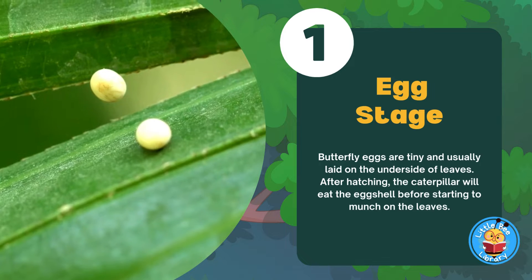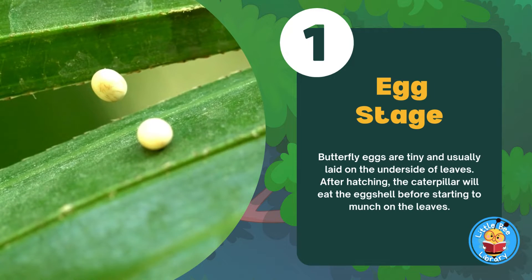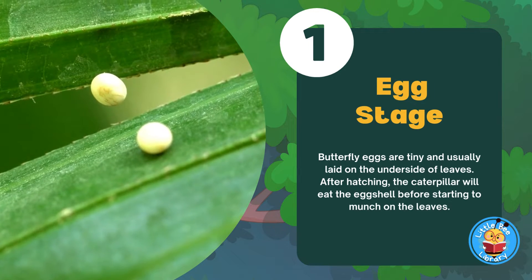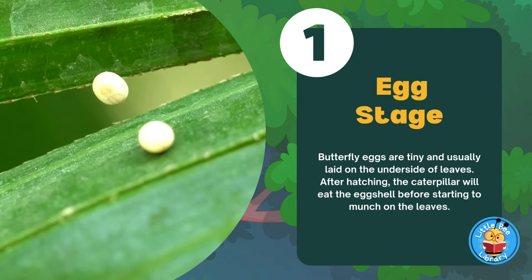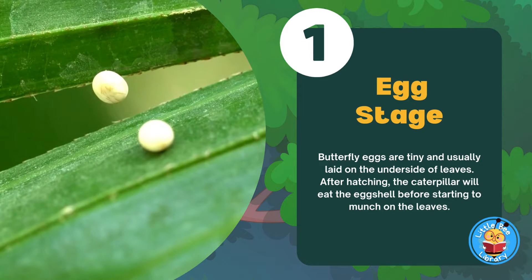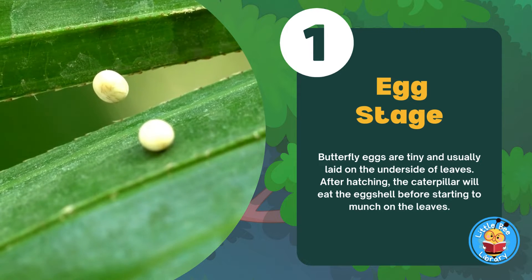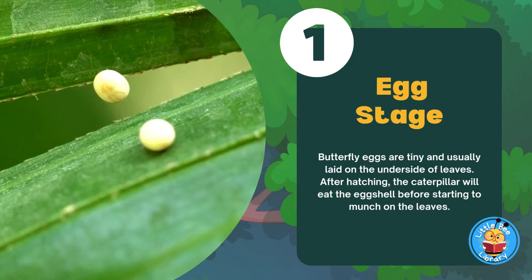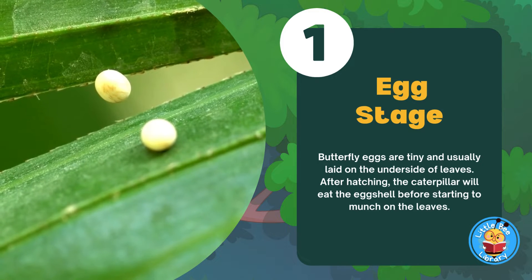Egg Stage. Butterfly eggs are tiny and usually laid on the underside of leaves. After hatching, the caterpillar will eat the eggshell before starting to munch on the leaves.